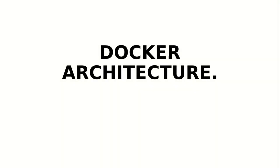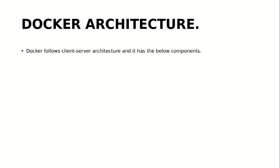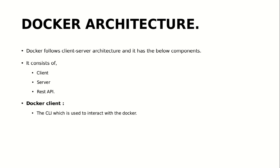In this session we are going to look at the Docker architecture — how Docker works. The Docker architecture follows a client-server architecture. It has a client-server setup and consists of the following components: a Docker client, a server, and a REST API. The Docker client is your CLI, or command line interface, and this is what we use to interact with Docker.